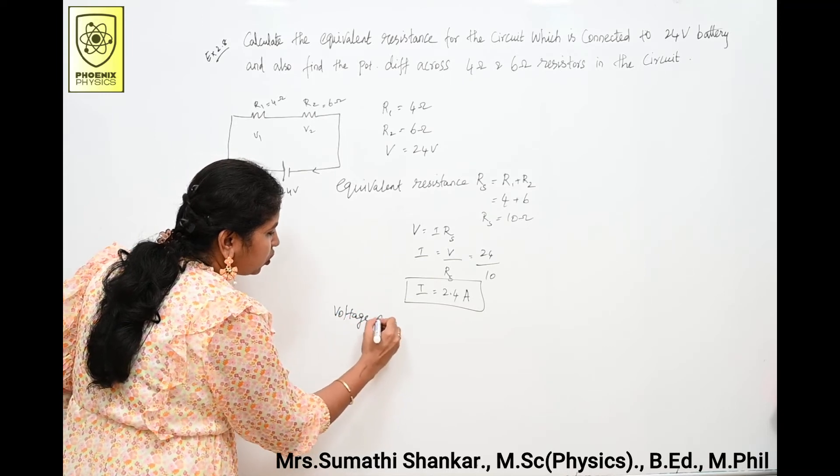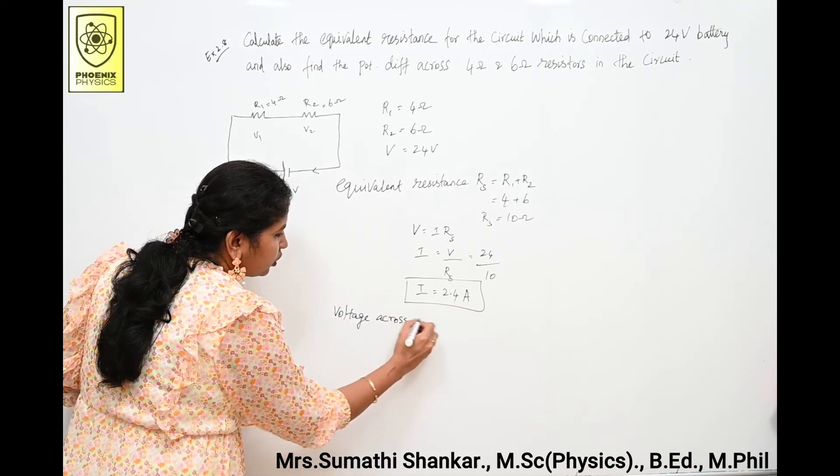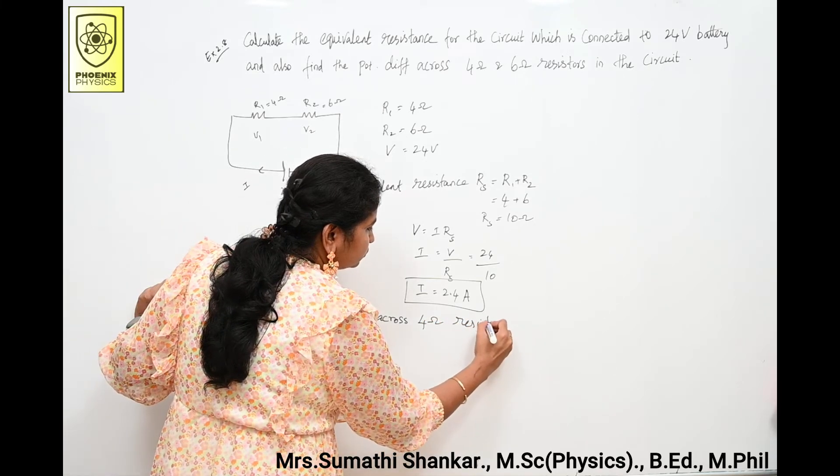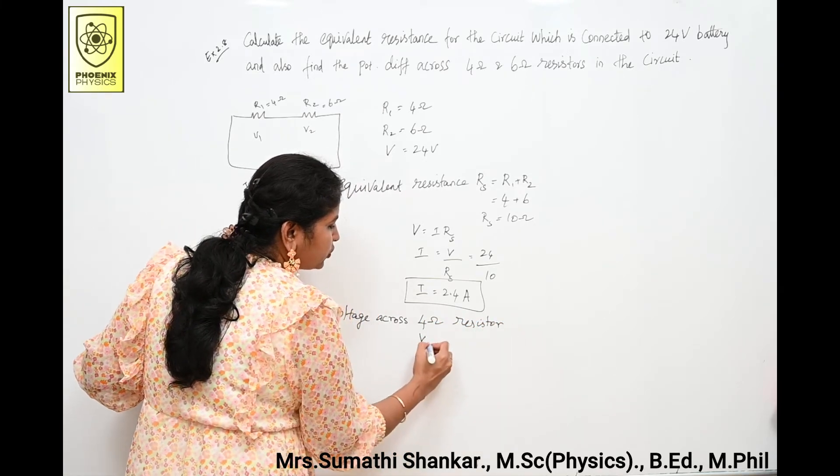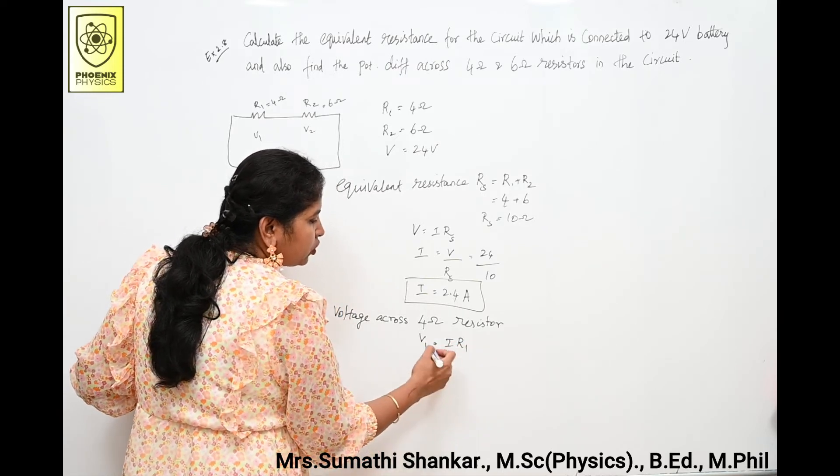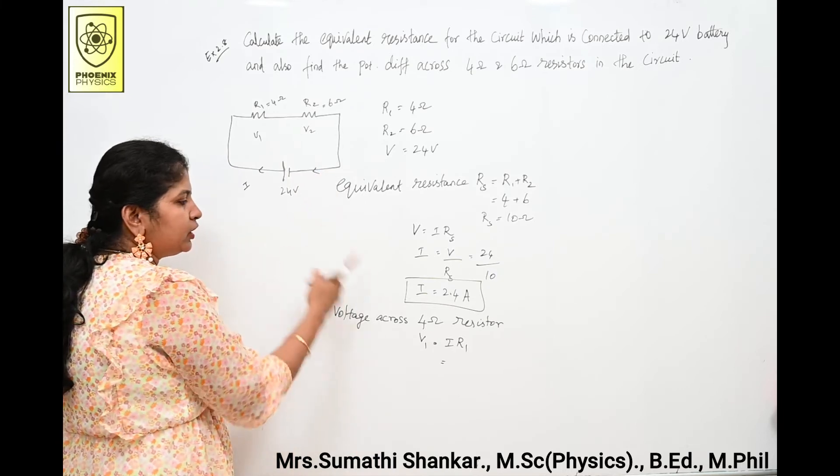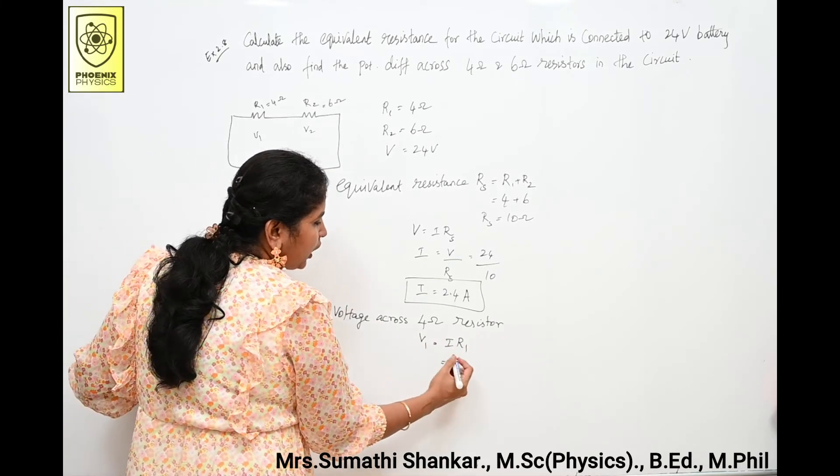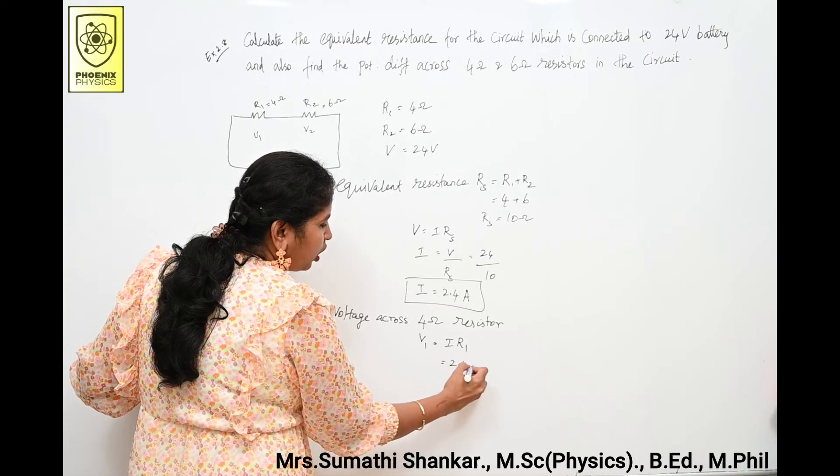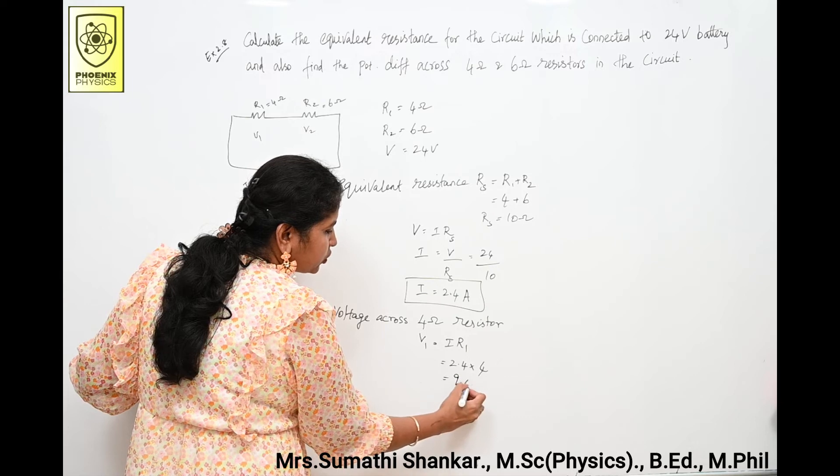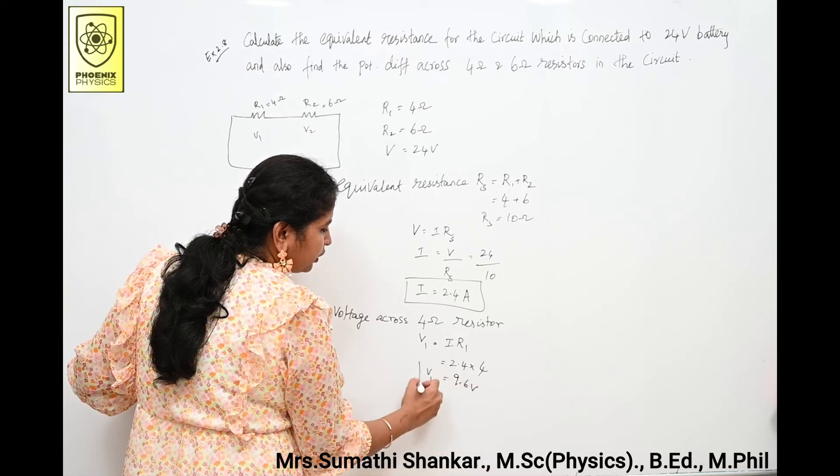voltage across 4 ohm resistor. So V1 is equal to I into R1, because in a series connection current is same. So V1 is equal to I into R1. I value is 2.4, R1 is 4 ohm. Your answer is 9.6 volt. This is V1 value. Next